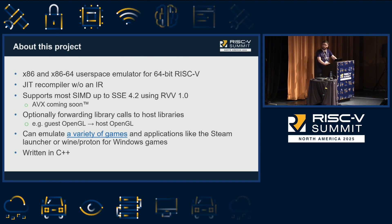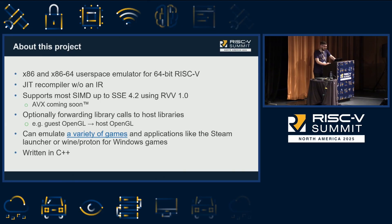It features a just-in-time compiler and supports most of the instruction set up to SSE 4.2. The SIMD instructions use RVV 1.0, and it works. It can emulate a variety of games and applications like the Steam Launcher for Steam DRM games, or Wine Proton for Windows games.